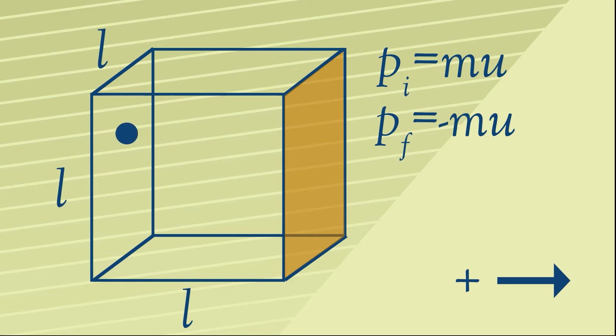After it leaves the wall when the collision is over, its momentum is minus mu because its velocity is now in the opposite direction. Change of momentum will therefore be the final momentum minus the initial, which in this case is minus 2mu.